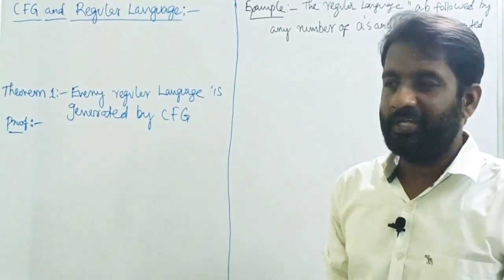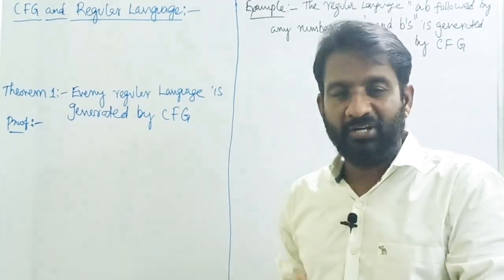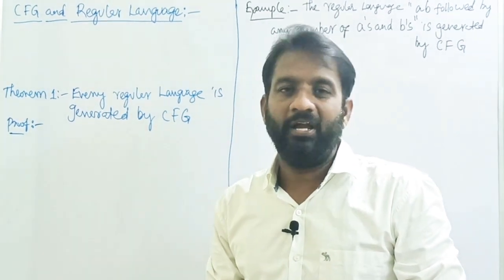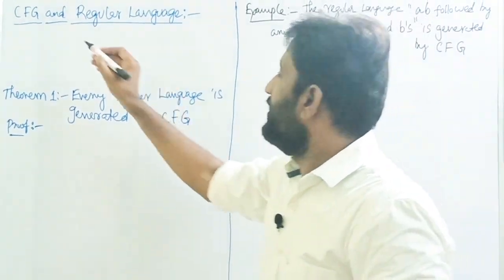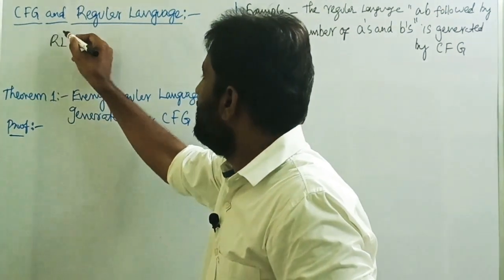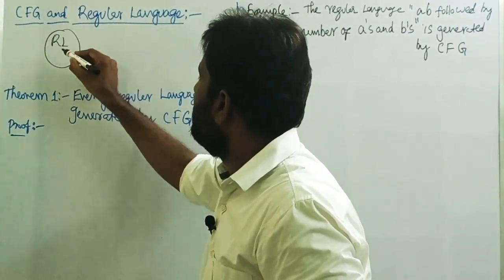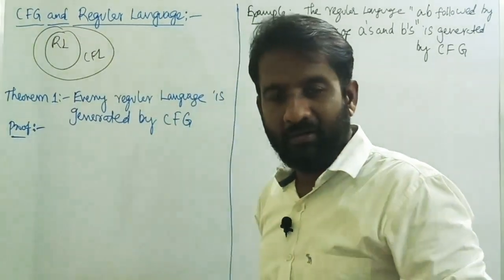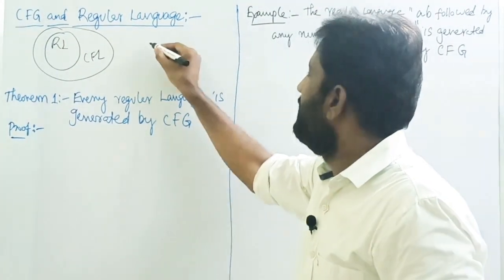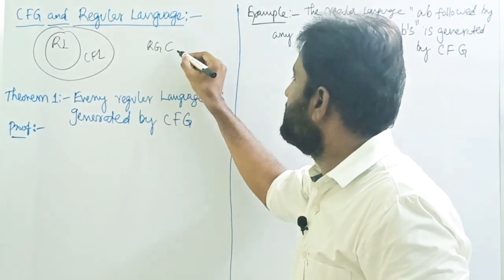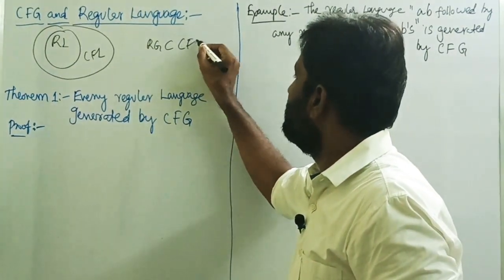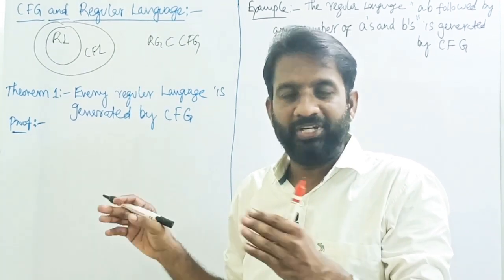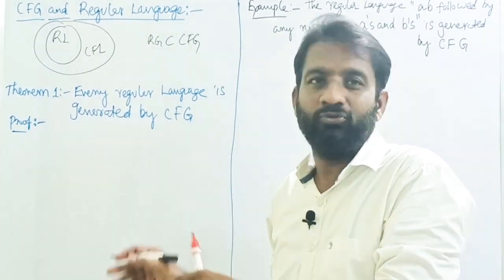Welcome back. The topic is context-free grammar and regular language. According to the Chomsky hierarchy, regular languages are subsets of the context-free languages, meaning that regular grammars are subsets of context-free grammars. I can prove this statement by using two theorems.